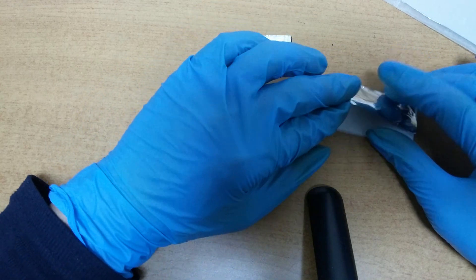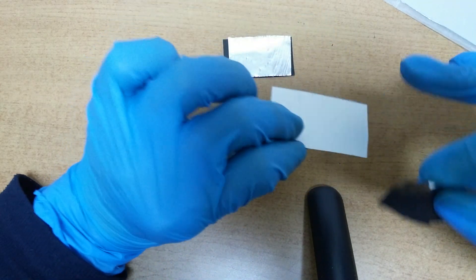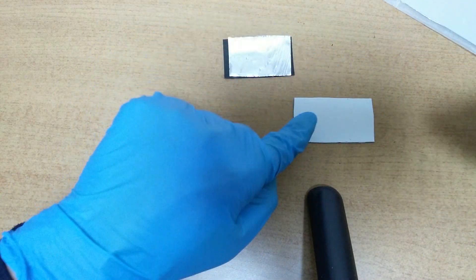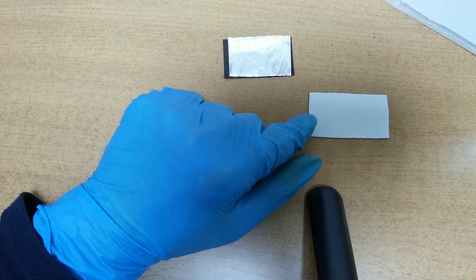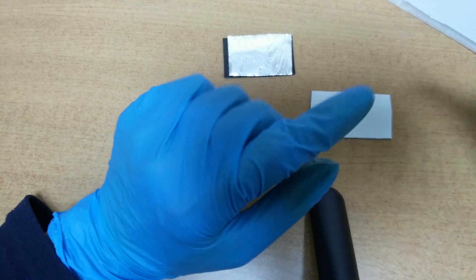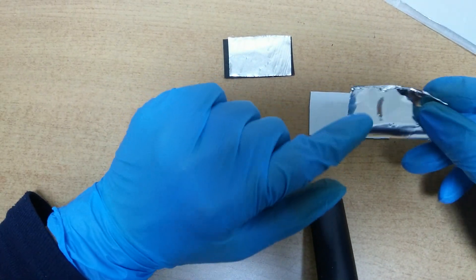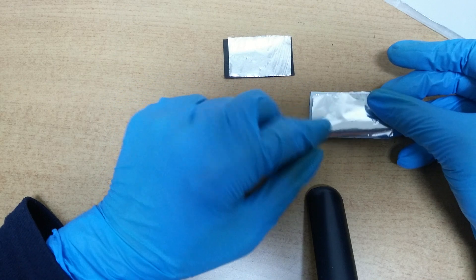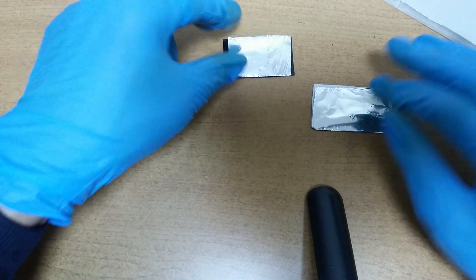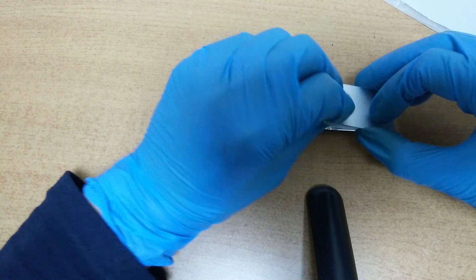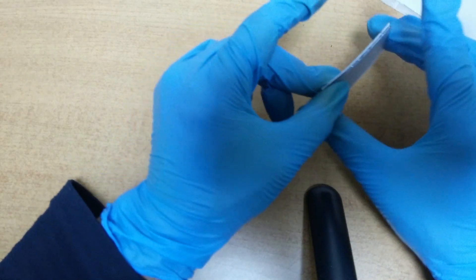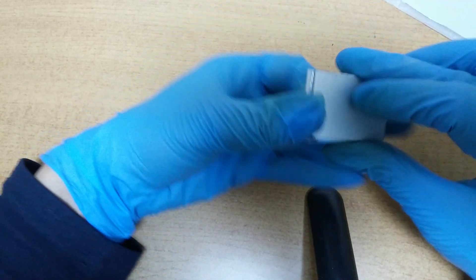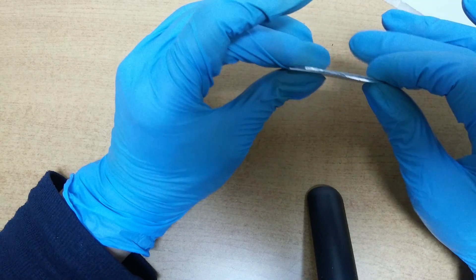And then, aluminum collector, anode, anode material, cathode material. I'm sorry - cathode and anode material, aluminum collector. One layer. And then, if we place them together, if we assemble them together, it becomes a solid-state battery.